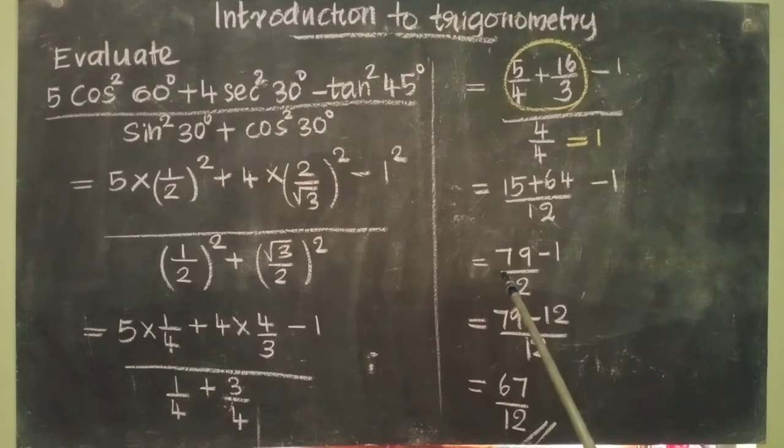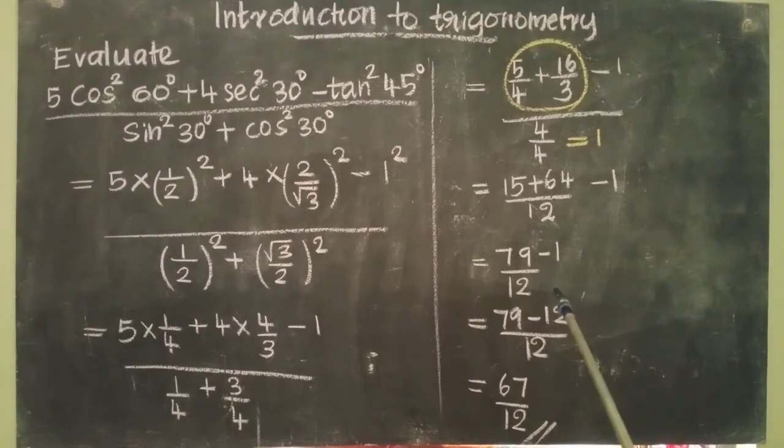That equals 79/12 - 1. Now how can we add this? We can add by using cross multiplication. We get (79 - 12)/12, which equals 67/12.